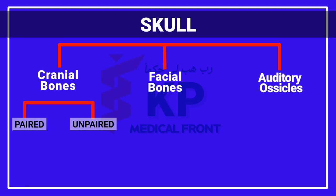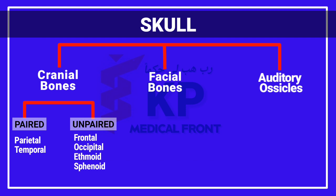Paired bones means they are two in number — i.e., they are in a pair. In the cranial division, the paired bones are the parietal bone and the temporal bone. On the other hand, in the cranial division, the unpaired bones are the frontal, the occipital, the sphenoid, and the ethmoid bone.